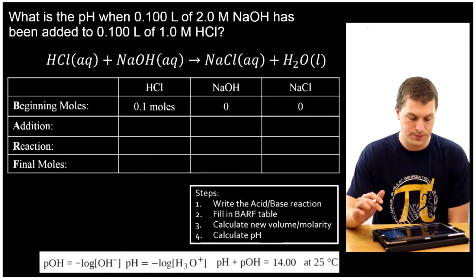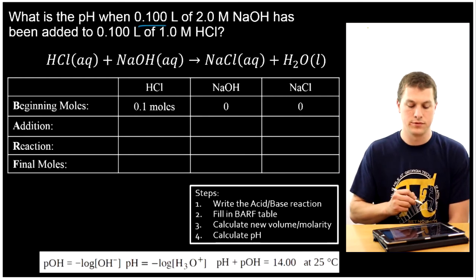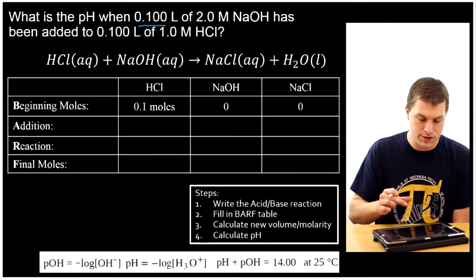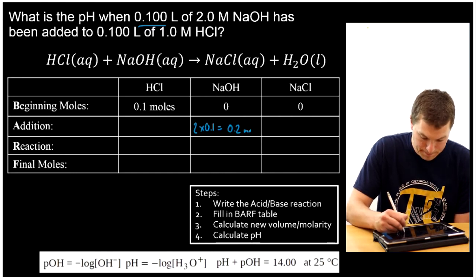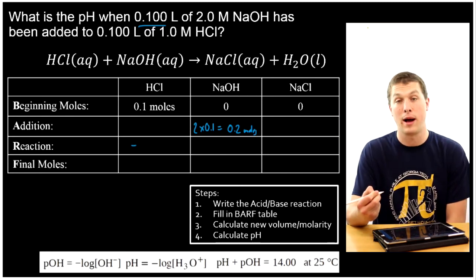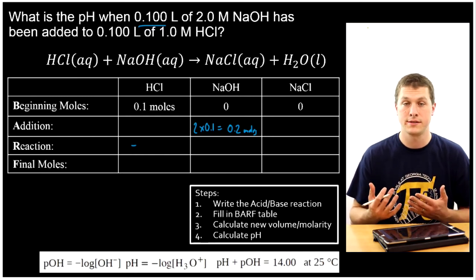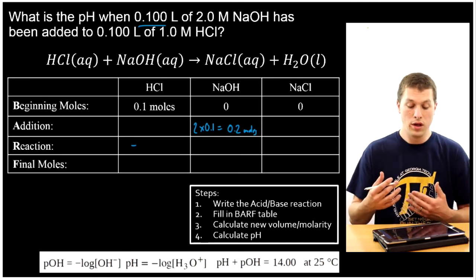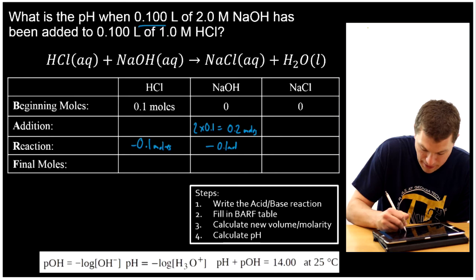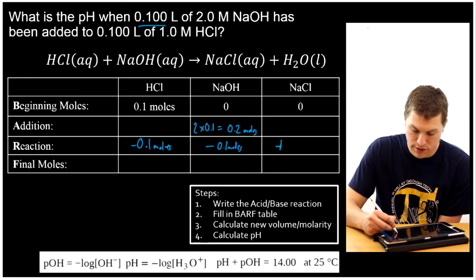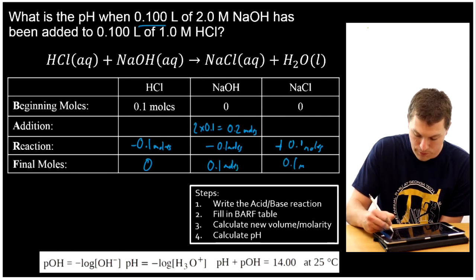One last calculation — we're going to continue past the equivalence point and add 0.1 liters of sodium hydroxide, which is double the volume from before. My addition is 2.0 times 0.1, giving 0.2 moles. HCl can only drop by 0.1 because that's all it has — it can't drop the full 0.2. Like if you have 20 bucks and someone asks for 30, you can only give 20. So HCl goes to 0, NaOH drops by 0.1 leaving 0.1 moles remaining, and NaCl increases by 0.1 moles.